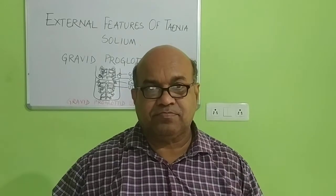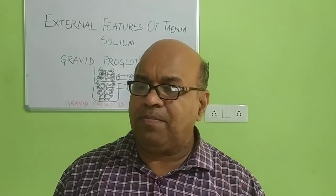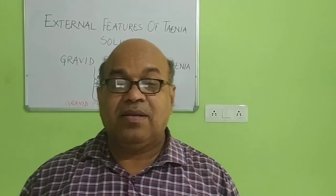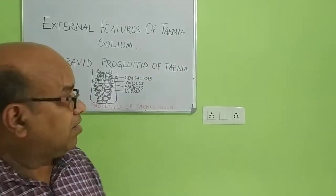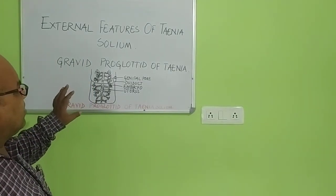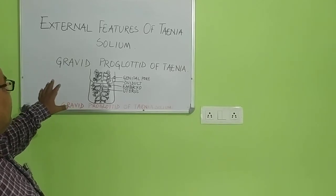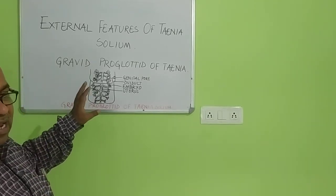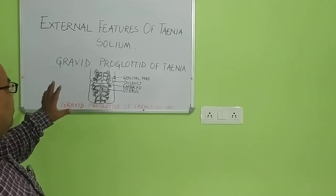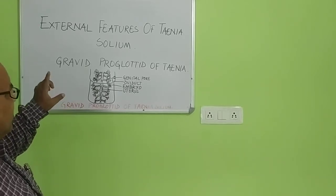Welcome students. Today I will explain the external features of Taenia solium. In those external features I will narrate about the mature proglottids of Taenia specifically which have completed the process of reproduction. Those segments will be called as gravid proglottid segments, and today I shall narrate about the outward or external feature of this portion of the worm Taenia solium.